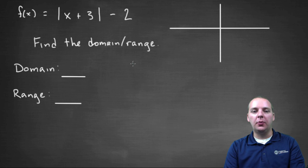So just by looking at the function, even without the graph, we can see that the new vertex is going to be at negative three comma negative two.